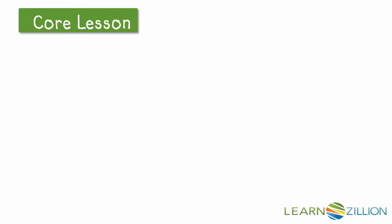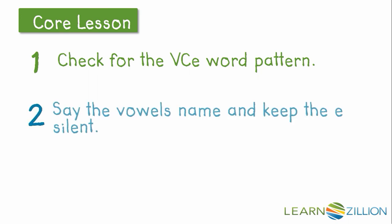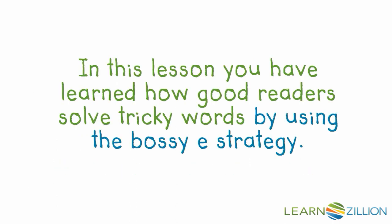So to solve tricky words, one thing I can do is first check to see if the word has a VCE word pattern. Then say the vowel's name and keep the e silent. And finally, blend all the sounds and read the word. In this lesson, you have learned how good readers solve tricky words by using the bossy e strategy.